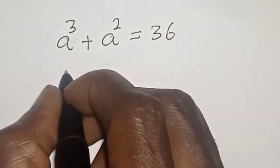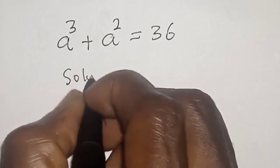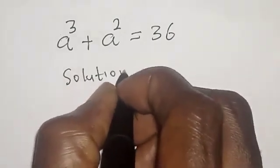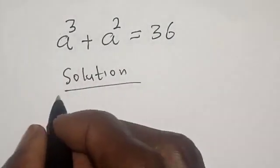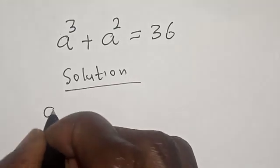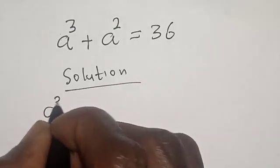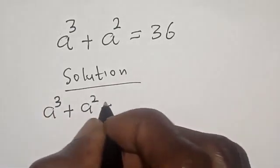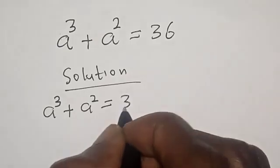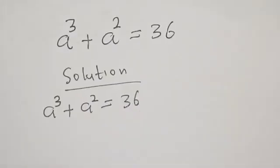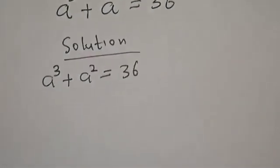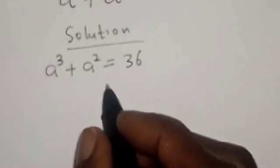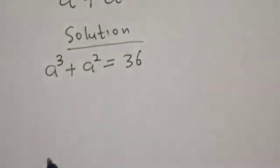We have the solution. A raised to power 3 plus A squared is equal to 36. Now let's check to find the first root.